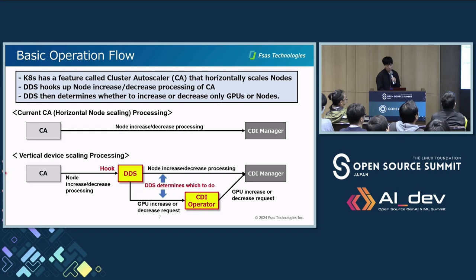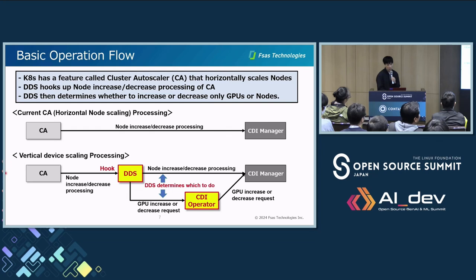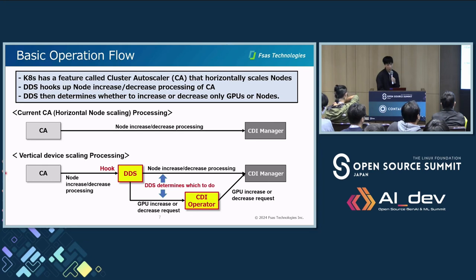The upper figure shows current CA processing of horizontal node scaling. If we use CA as infrastructure and CA determines to add or remove nodes, CA manager creates or deletes composed bare metal. The lower figure shows vertical device scaling by DDS. DDS hooks into node increase or decrease processing of CA. If DDS determines a node should be added, CDI manager creates composed bare metal. On the other hand, if DDS determines a GPU should be added, DDS requests CDI operator to add GPU. This is the basic operation flow.